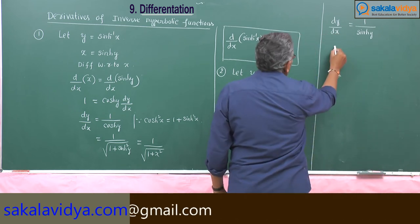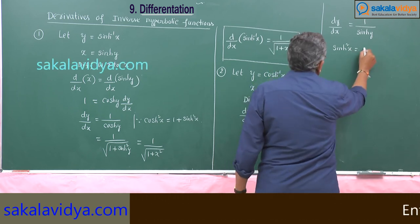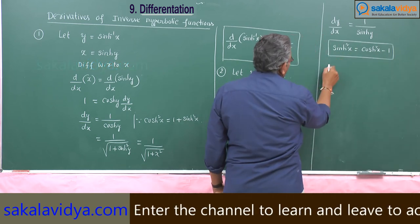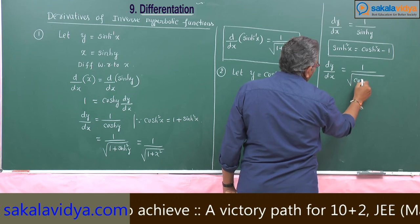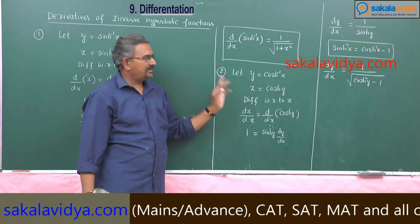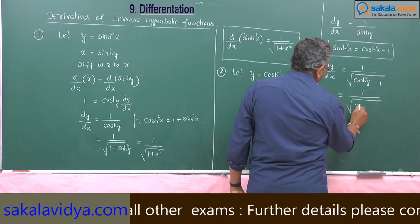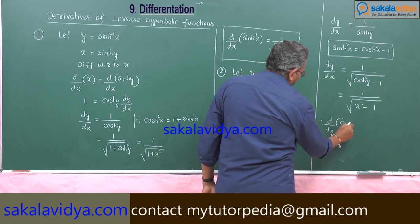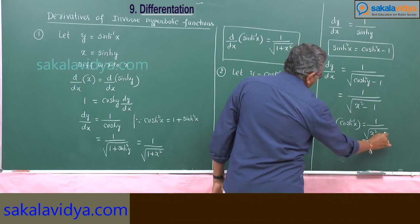We know that sinh²(x) is equal to cosh²(x) minus 1. So dy/dx can be written as 1 by root of cosh²(y) minus 1. Since cosh(y) equals x, we replace it there, so this is equal to 1 by root of x² minus 1. Therefore, d/dx of cosh⁻¹(x) is equal to 1 by root of x² minus 1.